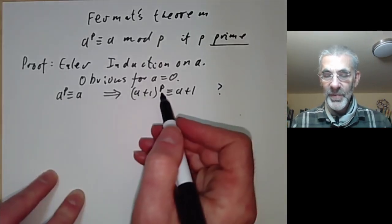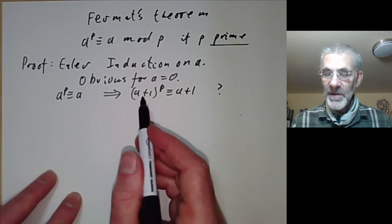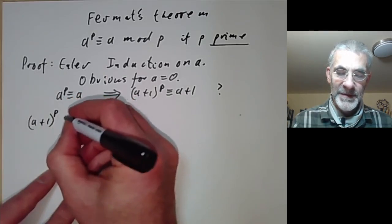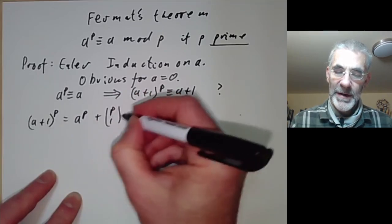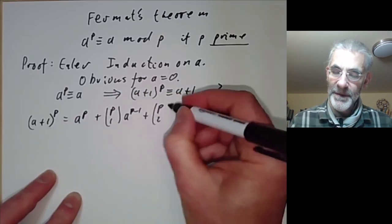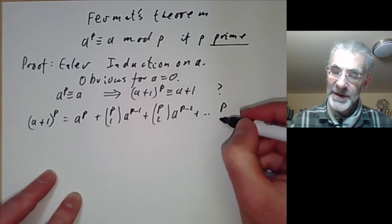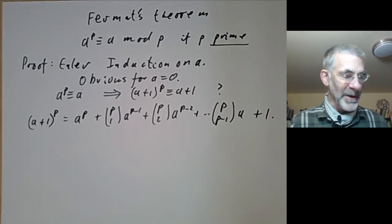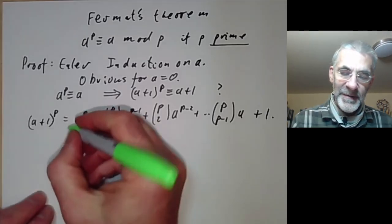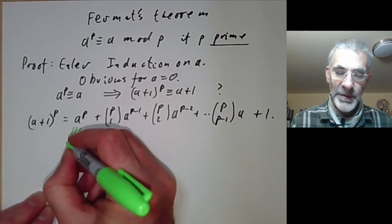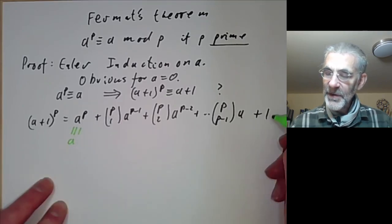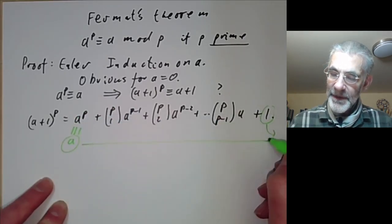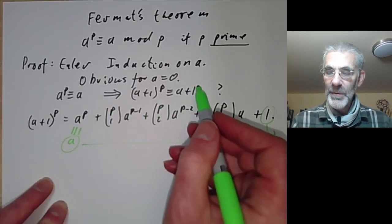To do this we expand (a+1) to the p by the binomial theorem. This gives a to the p, plus p-choose-1 times a to the p-minus-1, plus p-choose-2 times a to the p-minus-2, and so on, all the way down to p-choose-(p-1) times a, plus one. We notice we have a to the p, which by our inductive hypothesis is congruent to a, and a one, which is congruent to one — together these give us a+1, which is what we want.